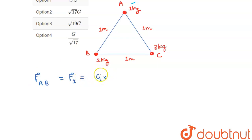This will be G into M1 M2 over R square, that means G into 1 into 2 over R square, that is 1 square. This is 2g.